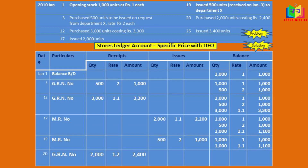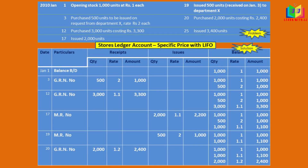On the 20th, we have a purchase of 2000 units, and the cost price was given as 2400. Here also, we have to find out the rate per unit. We will write it under the 1000 units: 2000 units with the calculated rate.